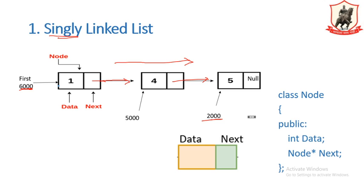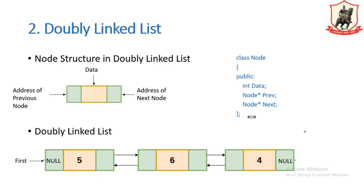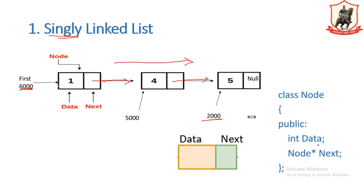If we want to implement or write code for this, the structure of the node contains a data field and an address field, where the address field points to the entire node. So the class node has two fields: first is the data field and the next is the address field. The drawback of this singly linked list is that we can traverse the list only in one direction — the forward direction. We cannot traverse the linked list in reverse direction efficiently. To overcome this drawback, there is the concept of a doubly linked list.